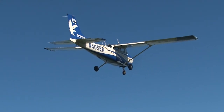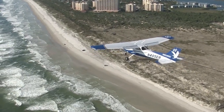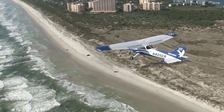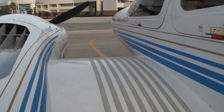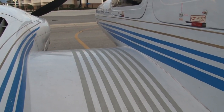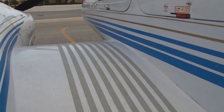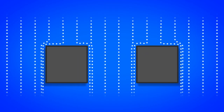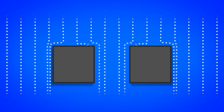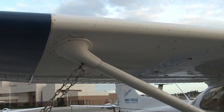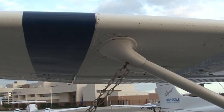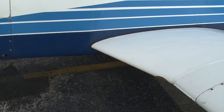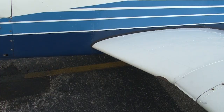Interference drag occurs in locations over the aircraft where different surfaces meet — for example, where the wings attach to the fuselage. Placing two objects close together will create up to 200% more drag than if each object were separate. To minimize this, manufacturers will place smaller, angled pieces at these locations.